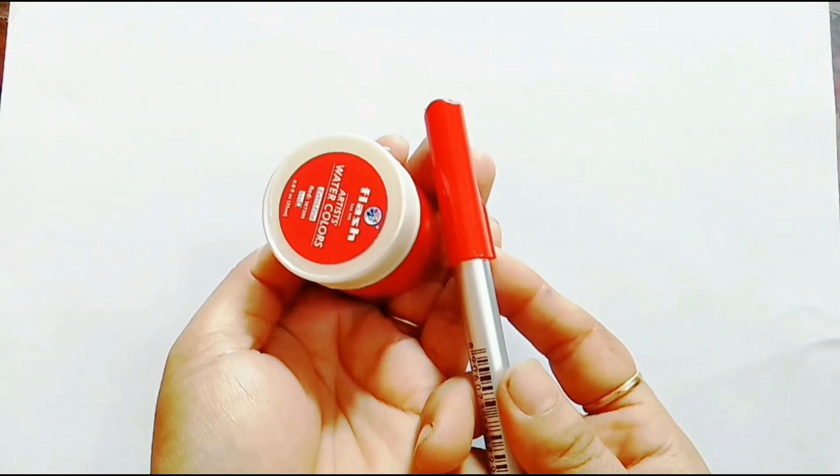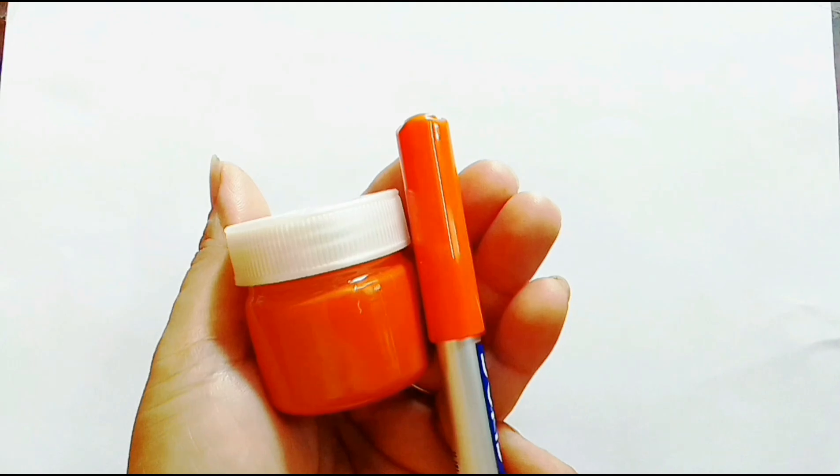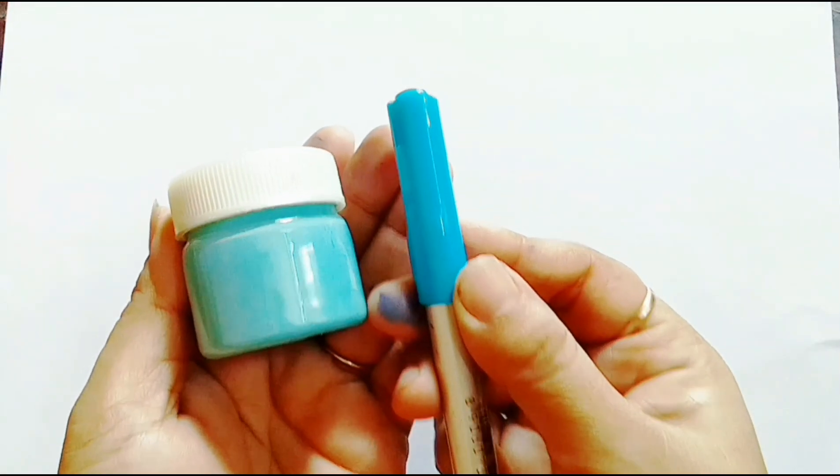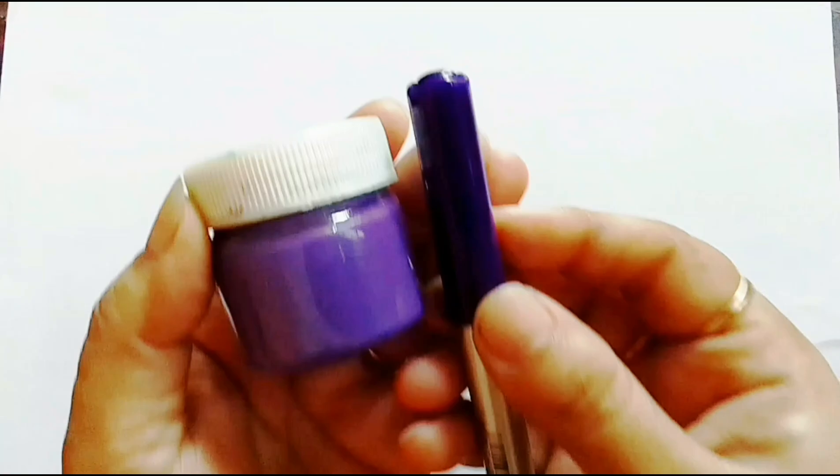Let's learn some color names: red color, orange color, blue color, yellow color, pink color, sky blue color, violet color.